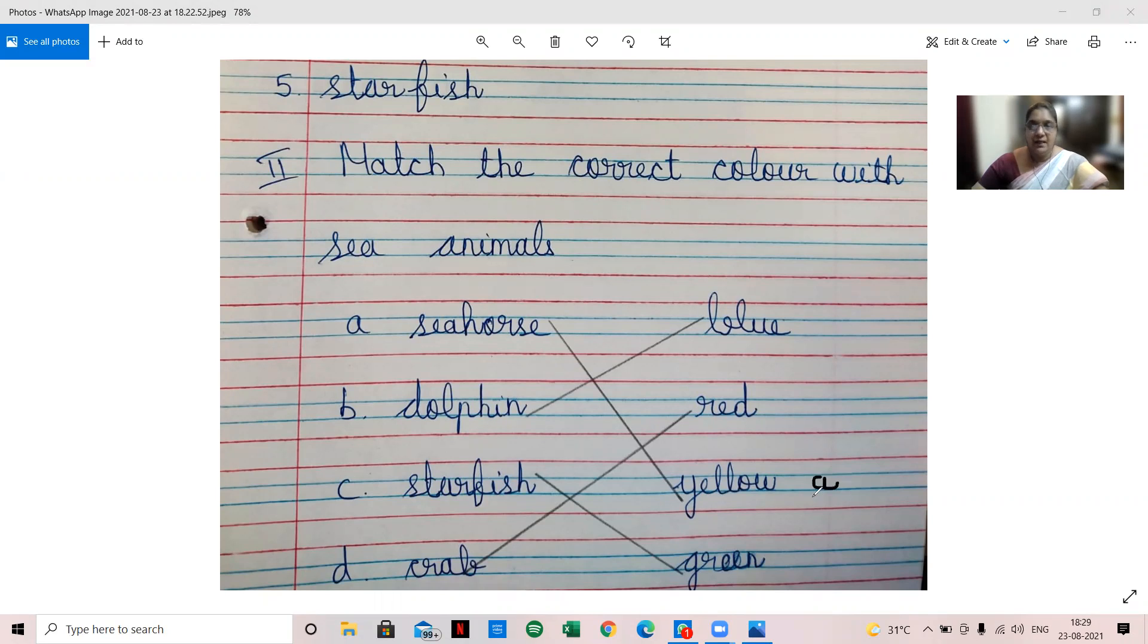See, Y. Now dolphin is blue, so here you have to write B. Then starfish green, so you have to write C. Then crab red, so you have to write D.